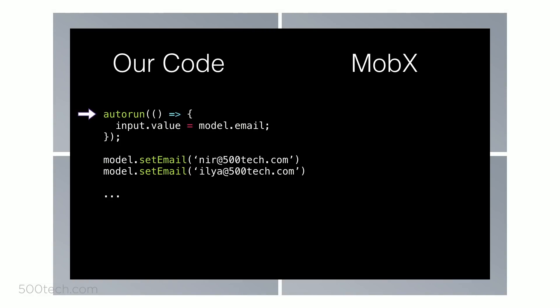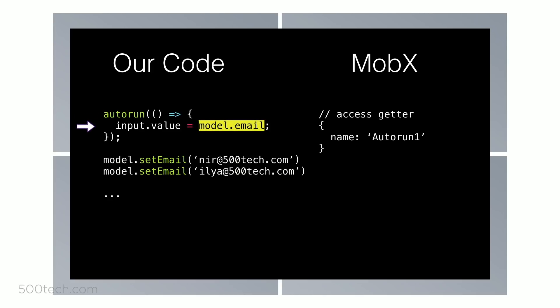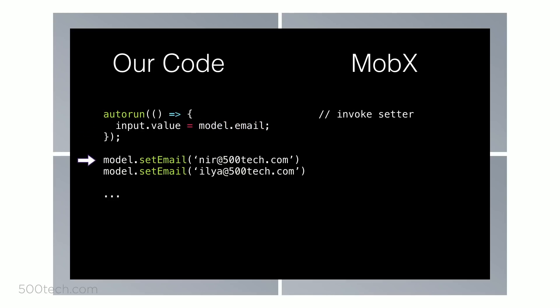The first time you call Autorun, MobX creates an object called a reaction and gives it a name. Then it runs the callback function. When you use an observable value, MobX knows about it via the getter and setter, and records that this reaction depends on this observable — building a dependency tree. Then every time you set a new value, say for the email property, MobX checks all dependency trees, finds the reaction, and knows to rerun it. MobX is pretty much the only reactive state management tool that automatically has intimate knowledge of your app — it knows what depends on what and can update things very performantly.